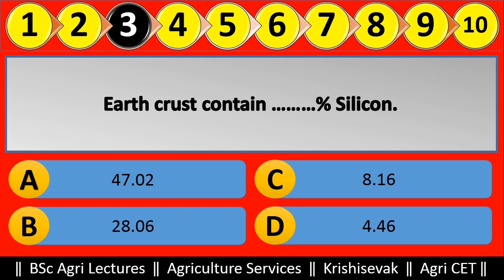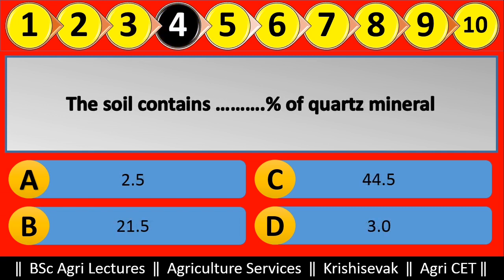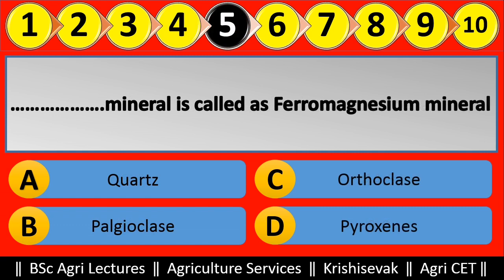Question 4: The soil contains blank percent of quartz mineral. Options are: (a) 2.5, (b) 21.5, (c) 45.5, (d) 3.0. Right answer is 2.5, option A. Question 5: Blank mineral is called as ferromagnesium mineral. Options are: (a) Quartz, (b) Plagioclase, (c) Orthoclase, (d) Pyroxene. Right answer is Pyroxene.